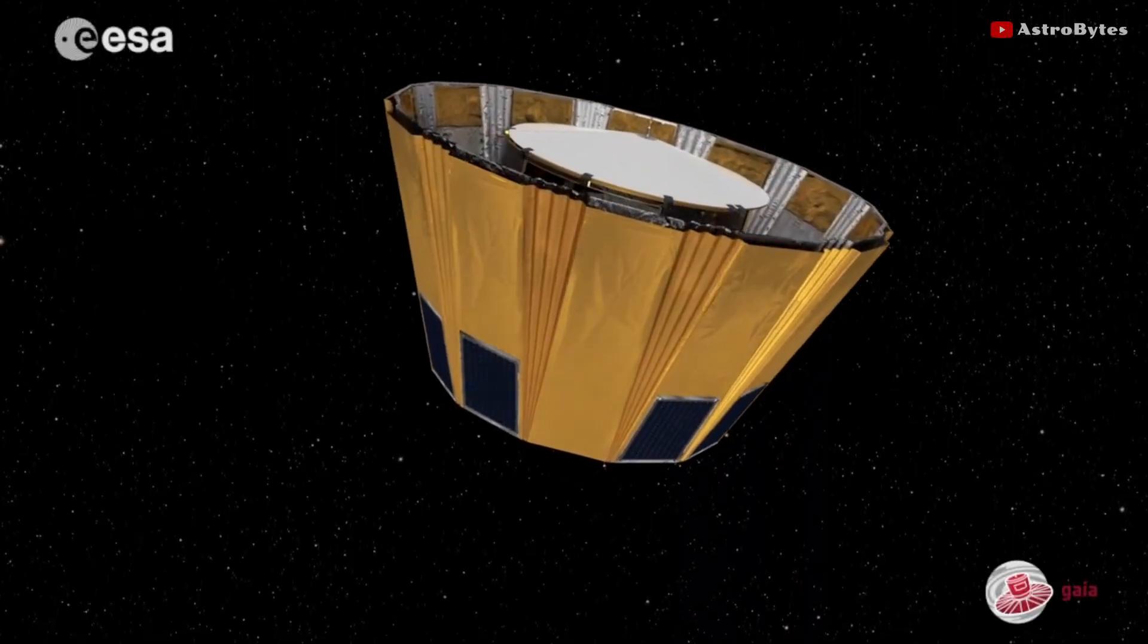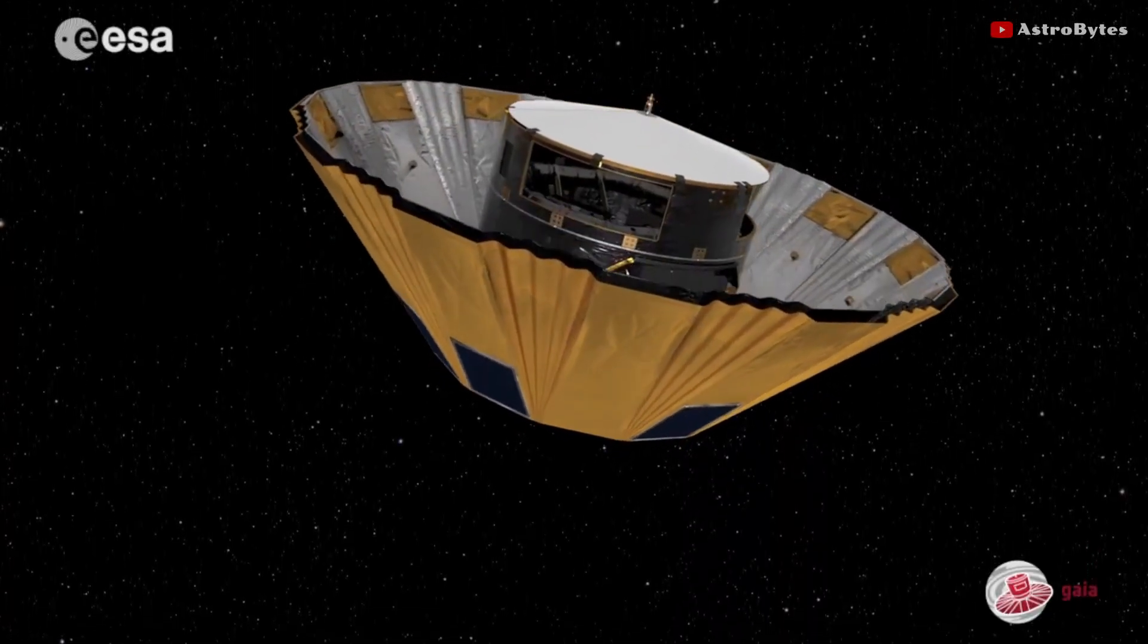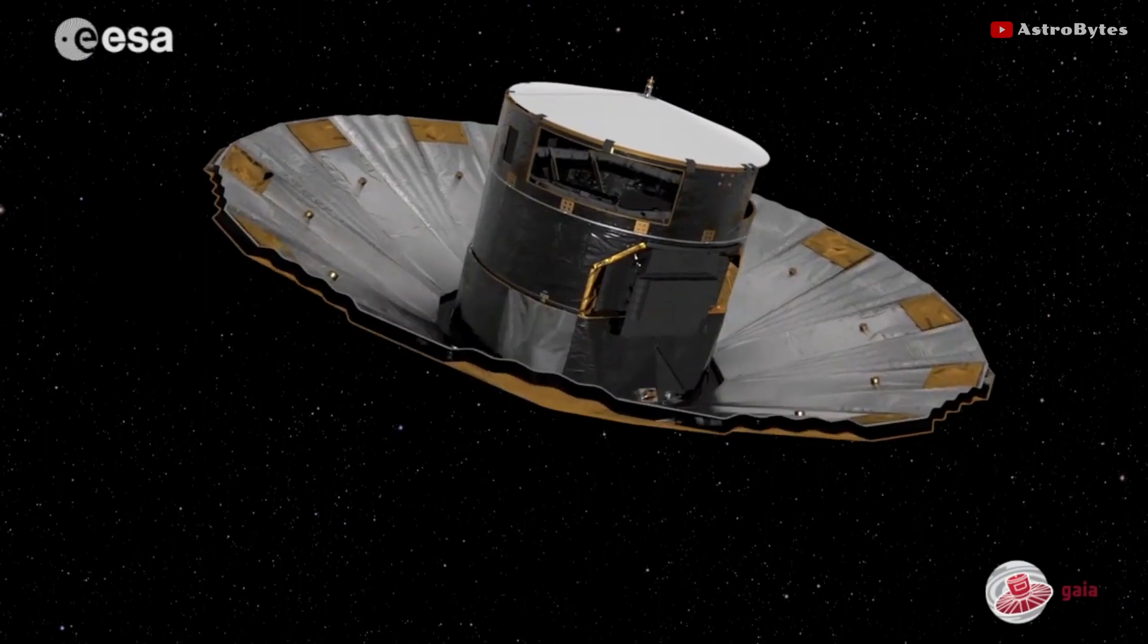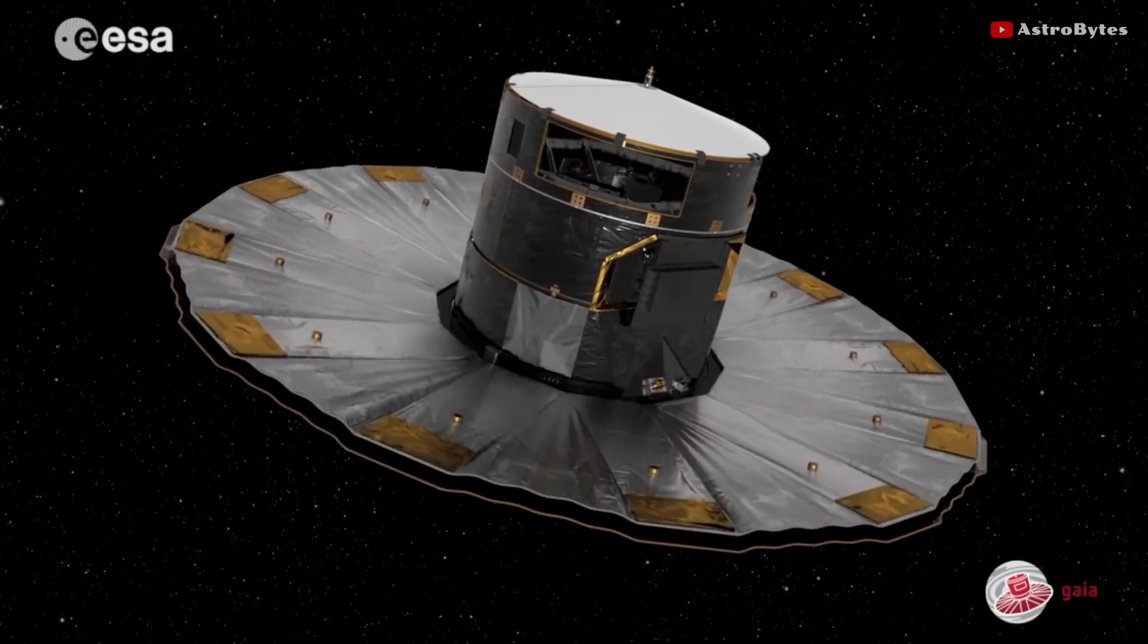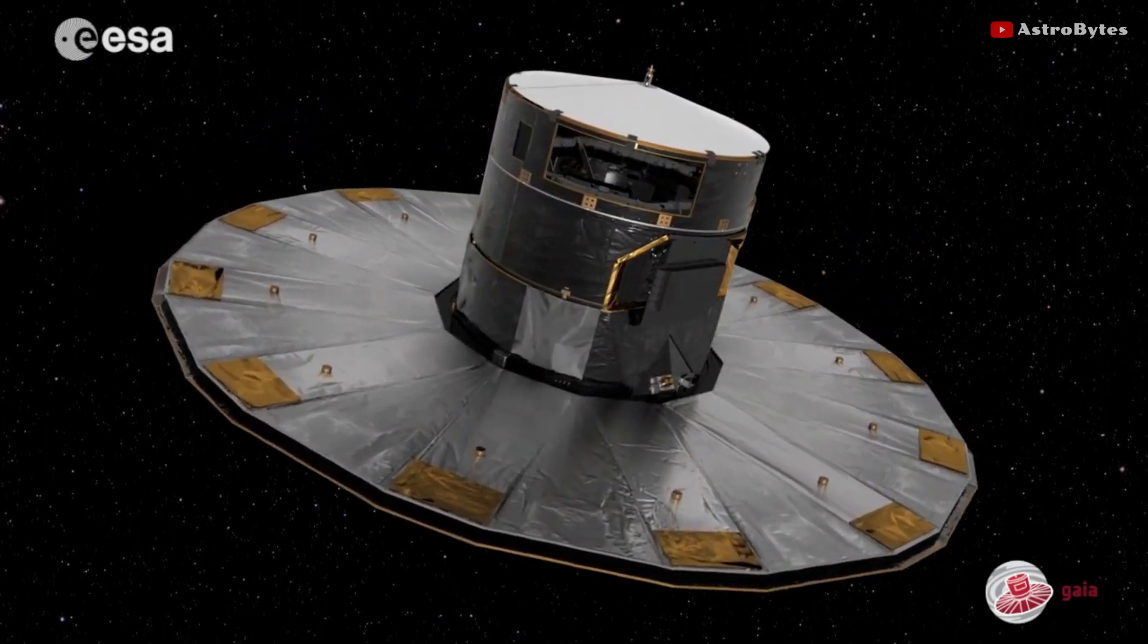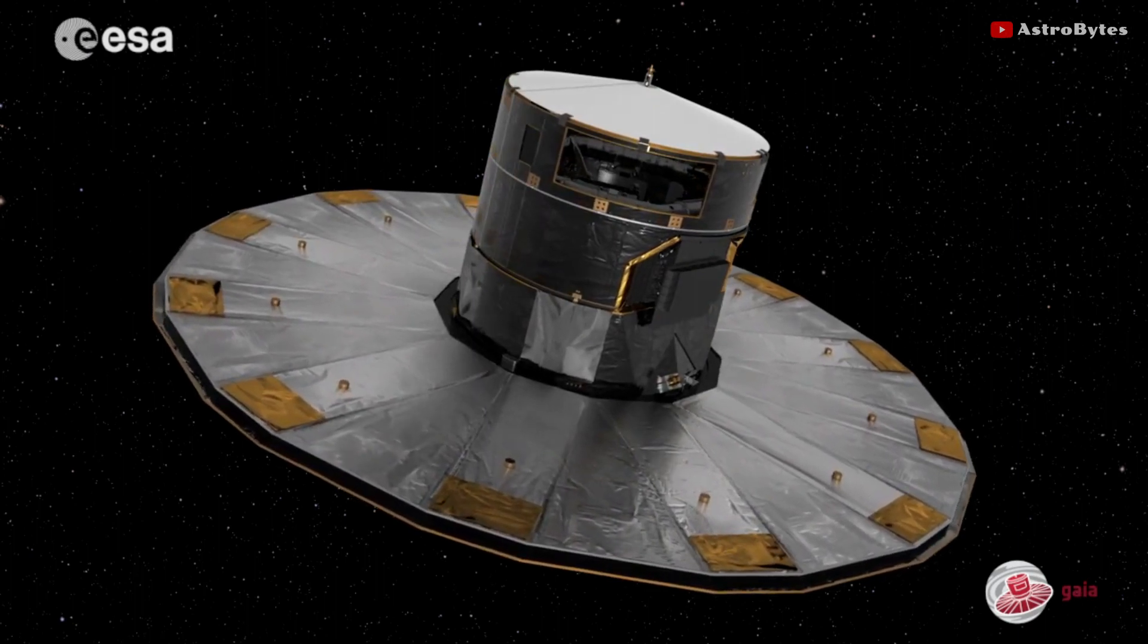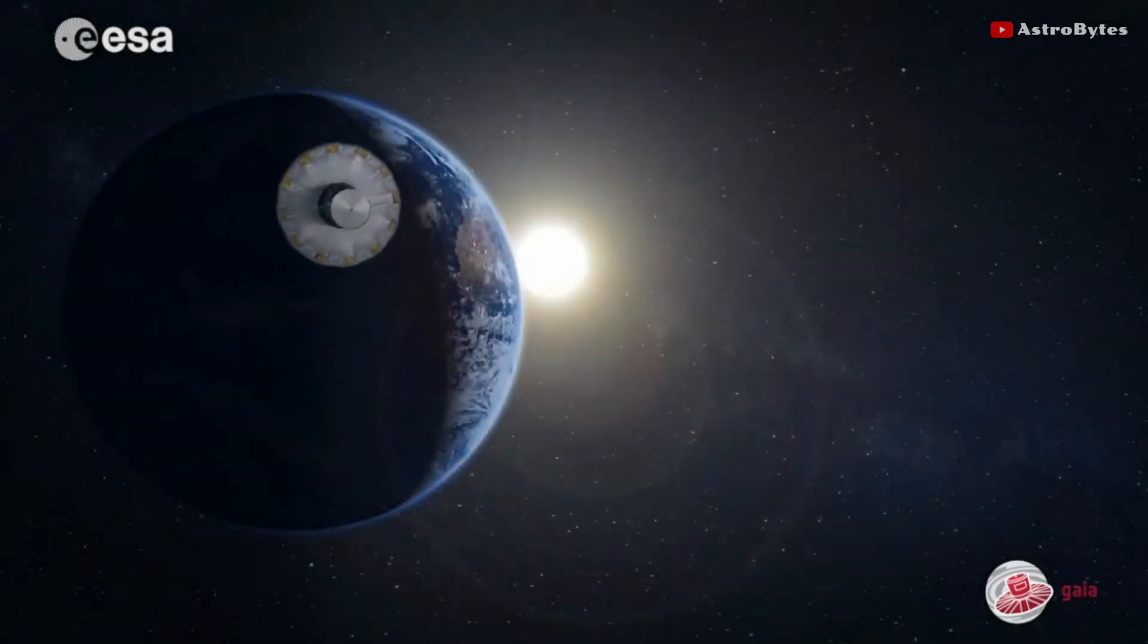ESA's Gaia spacecraft, a project to map the Milky Way, is also parked in L2 as of 2014, and not long after the James Webb Telescope arrived, Gaia managed to capture Webb with its finderscope instrument.